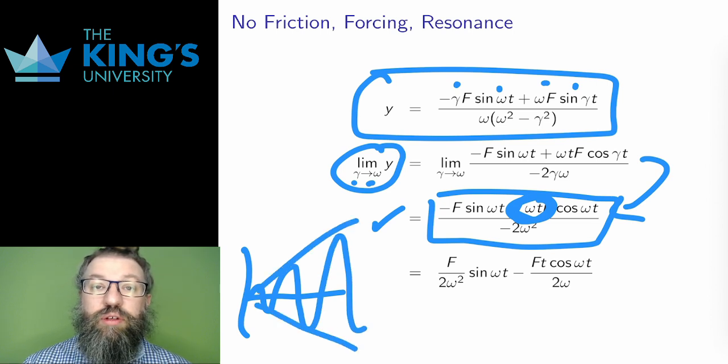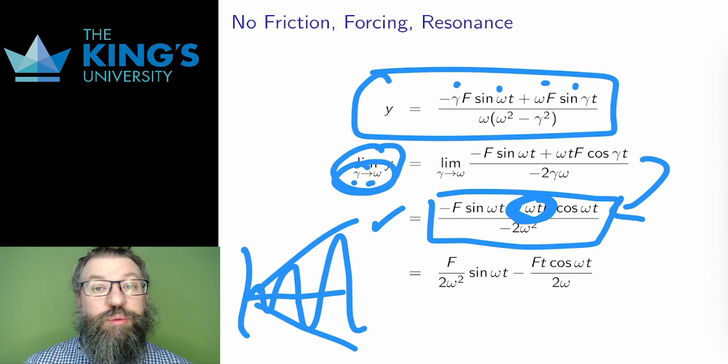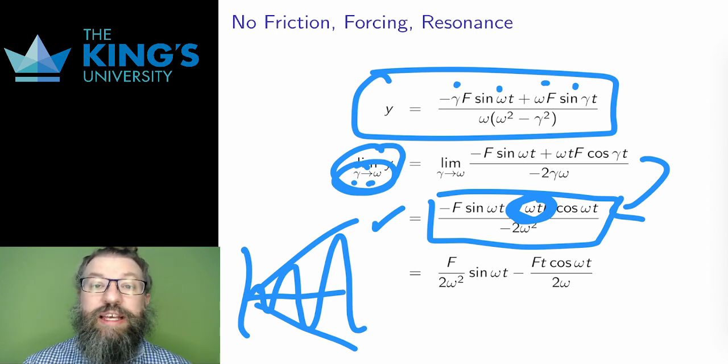This is resonance, at least in the ideal non-friction situation. If the forcing is right in tune with the natural frequency, then it all lines up and the amplitude starts to increase. The right frequency to choose in the frictionless situation is exactly the same as the natural frequency.